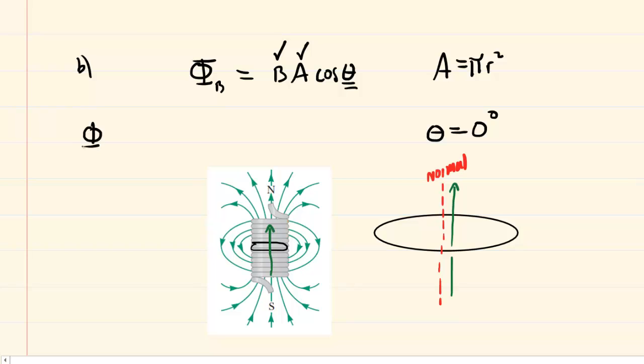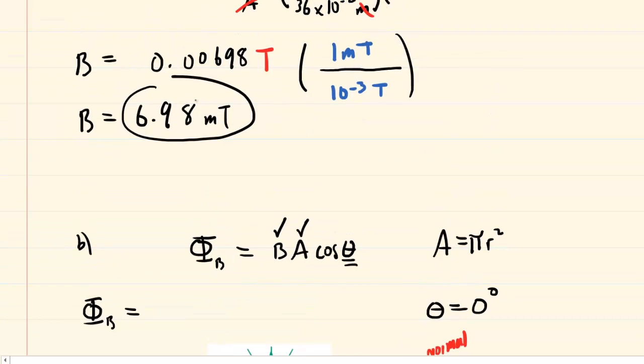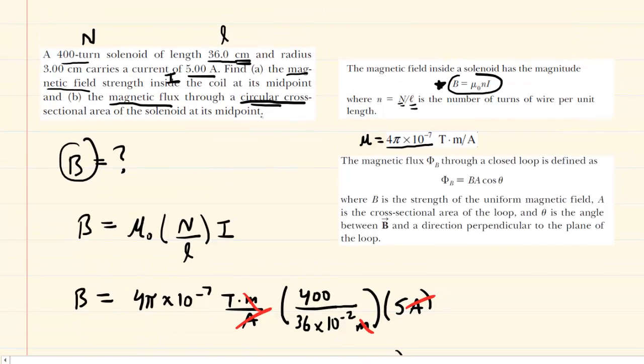When you plug in the magnetic field, make sure that you don't use the millitesla value. Use the tesla value because that is the standard unit. So it's 0.00698 tesla times the area. The area is pi r squared. So we'll take pi and multiply it by the radius squared.